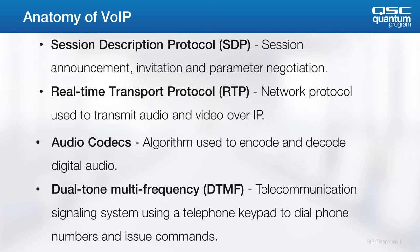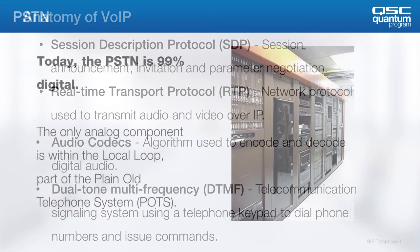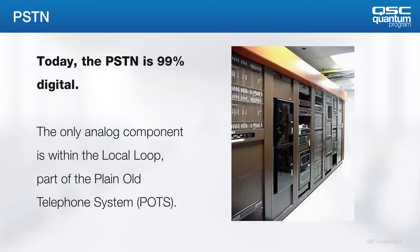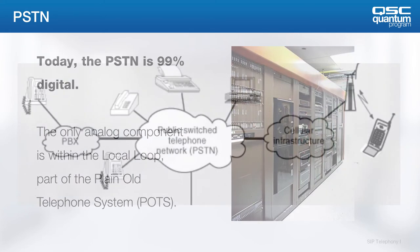Dual-tone multi-frequency, or DTMF, is the protocol for how we send digits over the network. The PSTN network is mostly digital and the only remaining analog portions are the local loop — things like your landlines. Landlines are going away, but many people still have one.